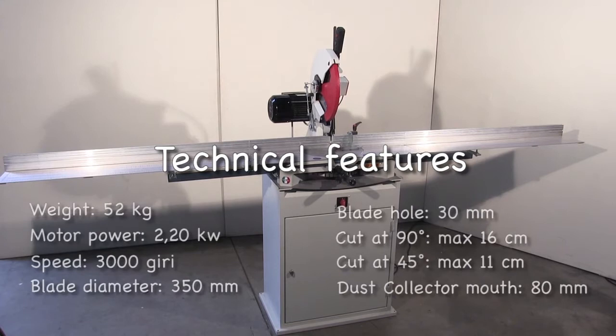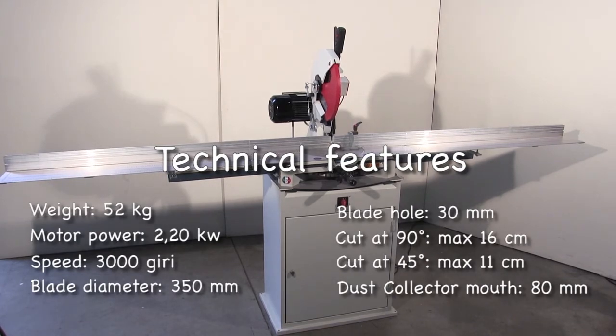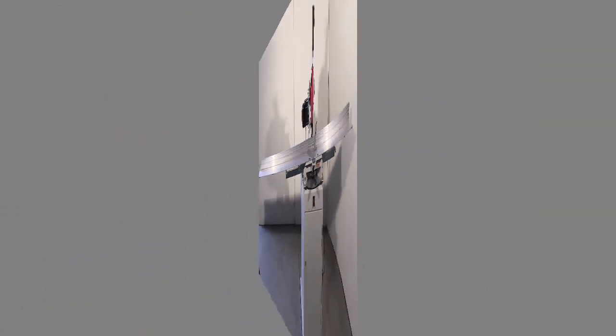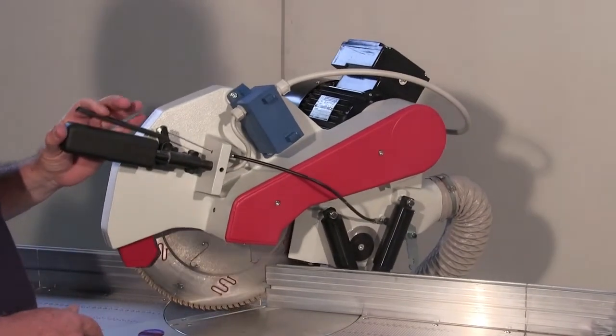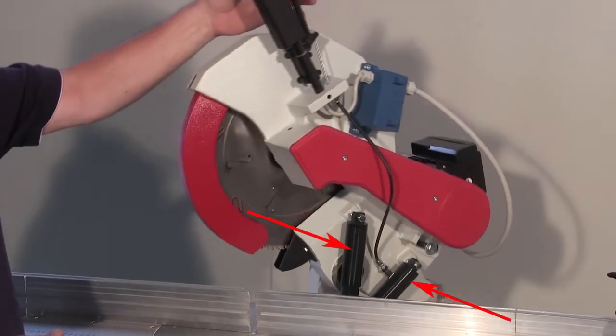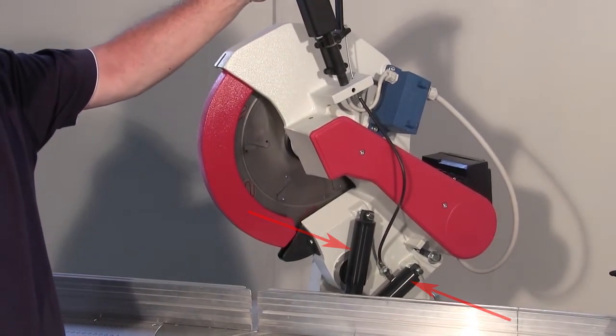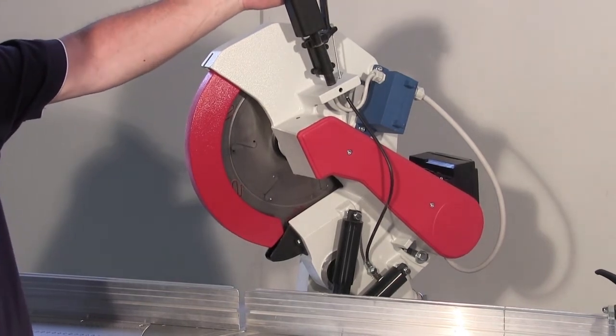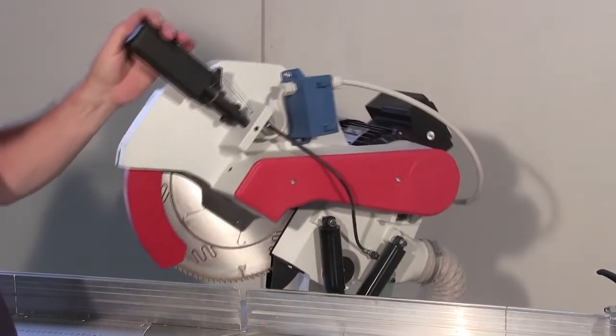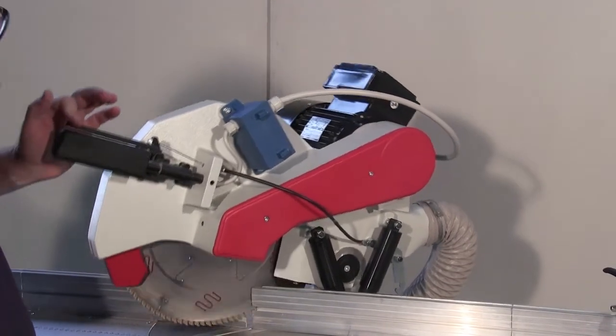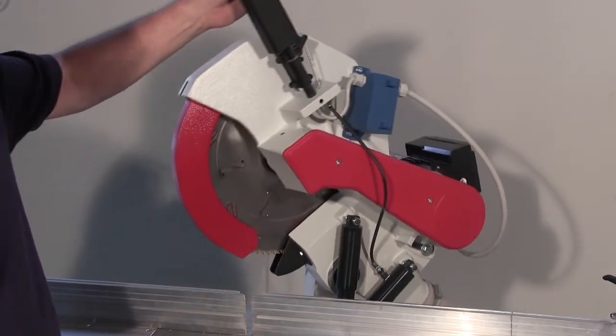These are the technical features of the GP350 saw. The two black pistons that are used to balance the weight so as to lighten the movements of the machine. It's important to know that the piston springs are hardened and realized with a state-of-the-art manufacturing methodology that avoids wear.